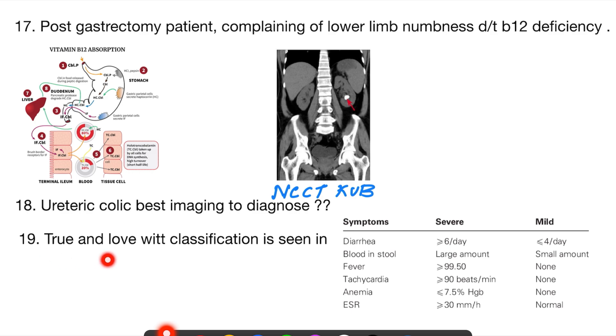We have Truelove and Witts classification—what is it seen in? The question is about: Truelove and Witts classification is seen in—basically, the table which I have shown here is the Truelove and Witts classification. It is seen in ulcerative colitis. Montreal classification and Truelove and Witts classification—two classifications were there.